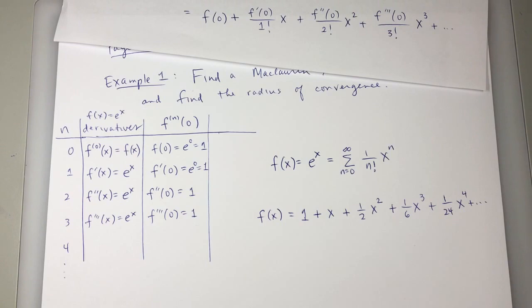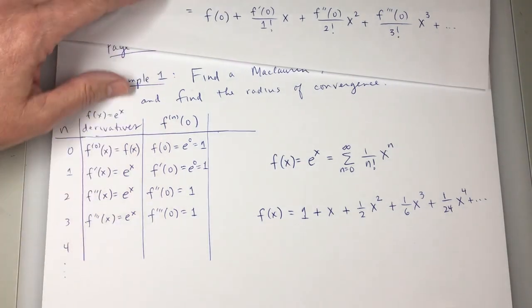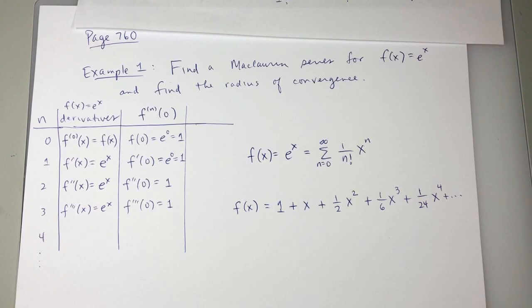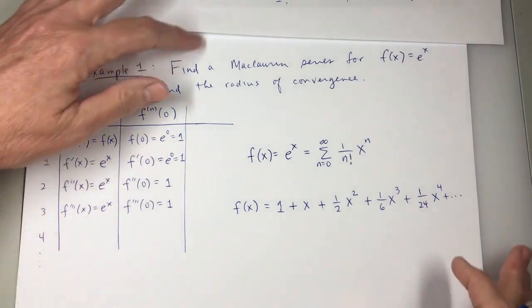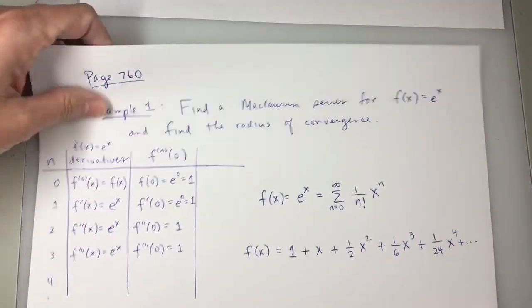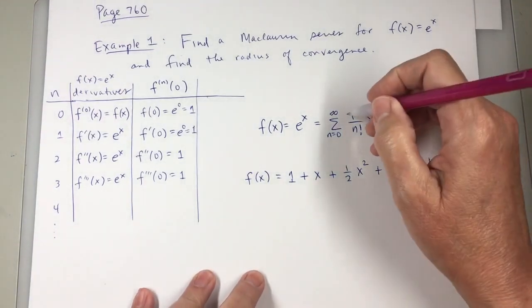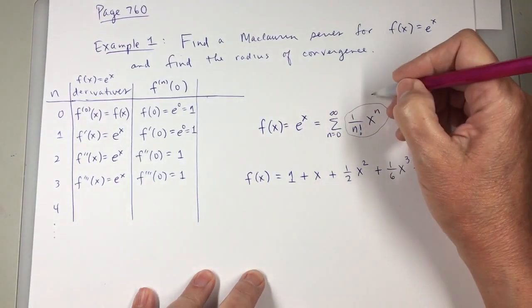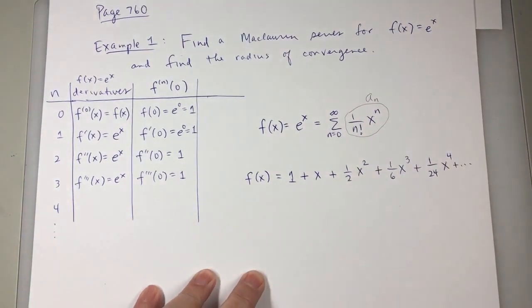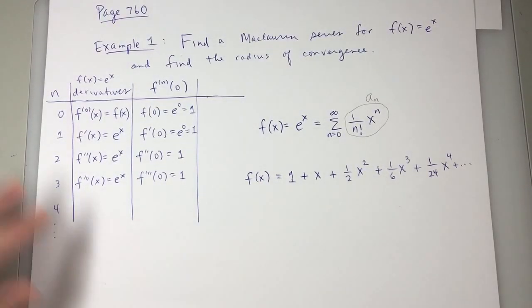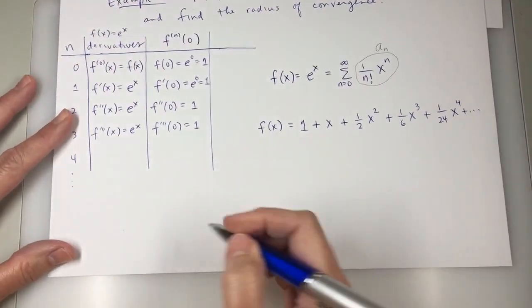They have also asked for the radius of convergence. And so for that, I would need to probably find the interval of convergence. And for that, I'm going to use the ratio test. Here's my Maclaurin series. This is a sub n for the ratio test.